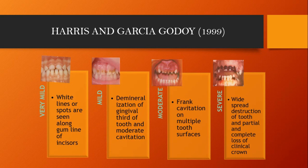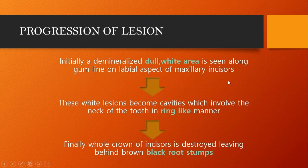Harrison, Garcia, and Godot in 1999 gave another classification that includes very mild, mild, moderate, and severe. In the very mild (mildest) form, white lines or spots are seen along the gum line of incisors. If proper oral hygiene is maintained and topical fluoride is applied at this level, this can be arrested. In mild, there is demineralization of the gingival third of the tooth and moderate cavitation. Brown cavitation is seen in the cervical region. Frank cavitation on multiple tooth surfaces can be seen in the moderate stage. If it progresses to severe, there is widespread destruction of the tooth and partial or complete loss of clinical crown, leaving no other option than pulpectomy or extraction.